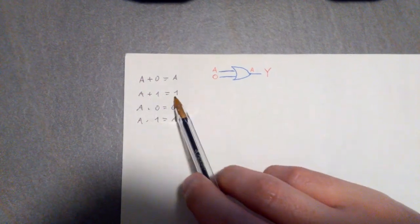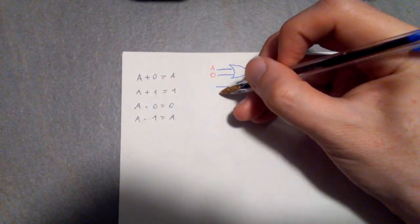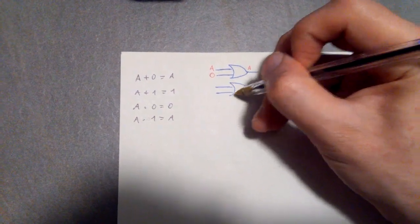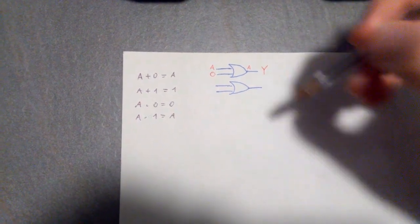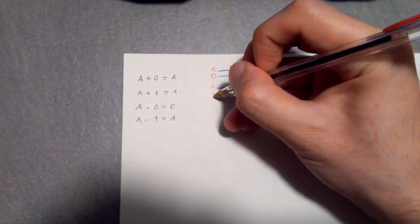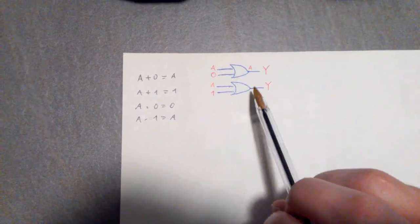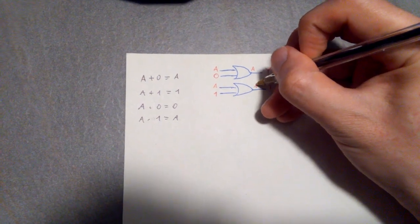The second one, A plus 1 equals 1, basically means that I still have this OR gate like so, with the output Y, the input A, and the other one is 1. So it doesn't really matter, since it's an OR gate, the value of A, the output is always going to be 1.